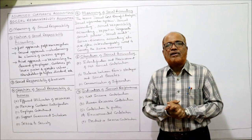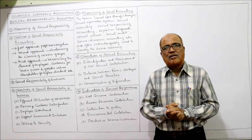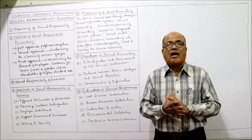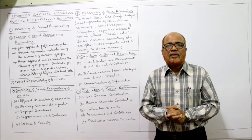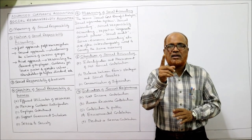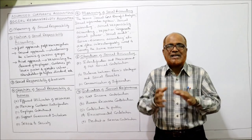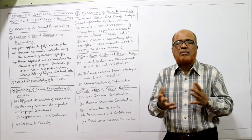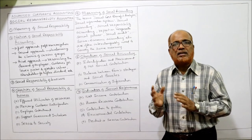A business has to consider the interest of different stakeholders. Apart from shareholders, there are other parties who have a stake in the business — customers, employees, the government, and society at large. The business organization has to satisfy the interest of all these parties. The objective is not only to earn profit or maximize shareholders' wealth; there are a number of other obligations and responsibilities.